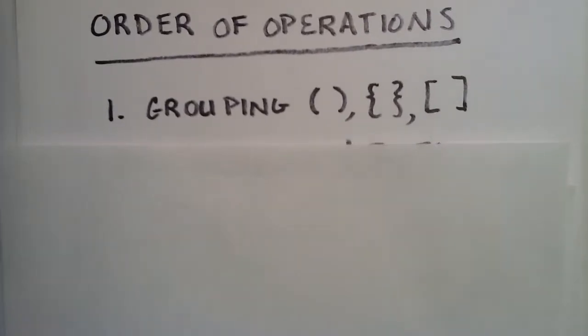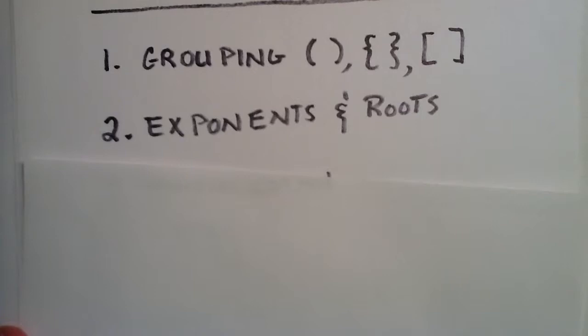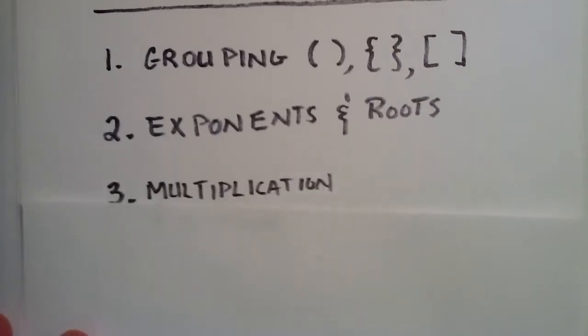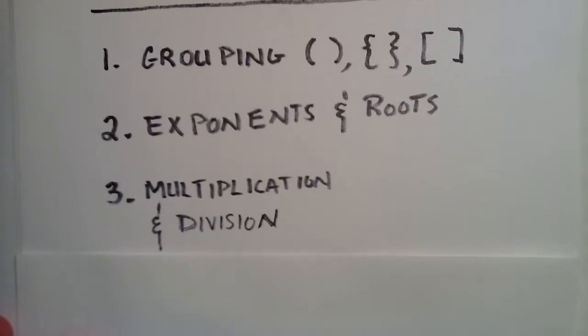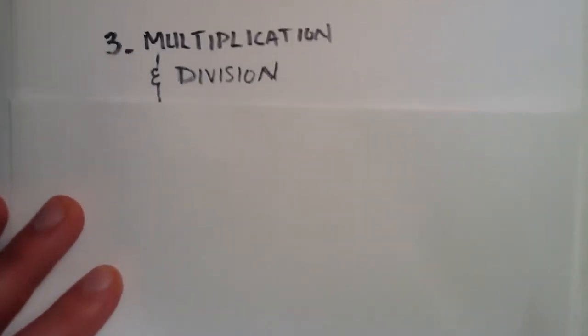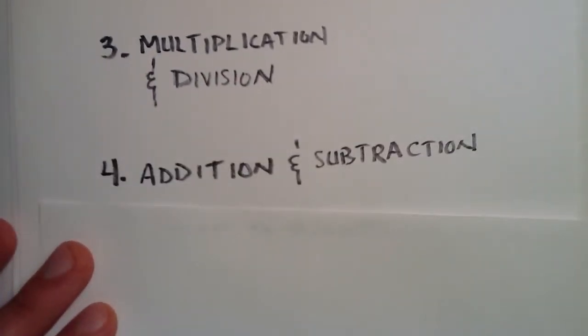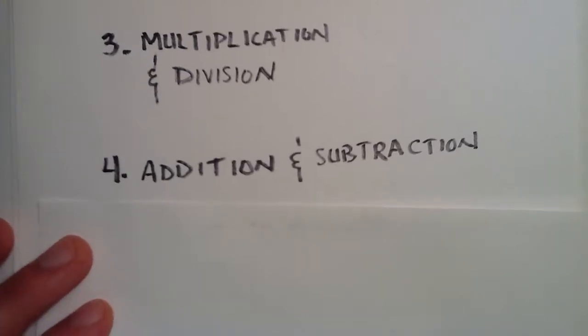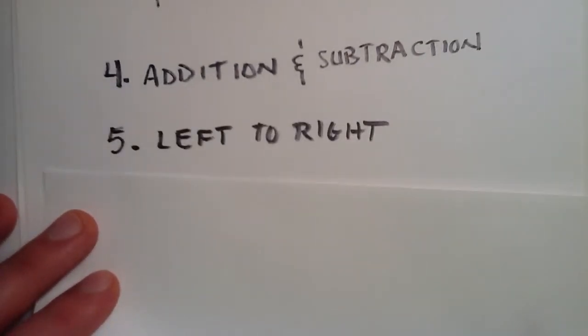After we've done those, then we focus on the exponents and roots. And after exponents and roots, we do multiplication and division. And then fourth on the list, we take care of addition and subtraction. And then if there's any ambiguity, we do left to right.